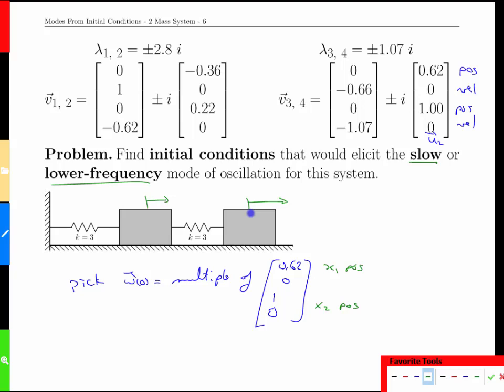Again this will be so much easier to see when it's animated later on in this series of videos. For now it's enough to recognize that we have four vectors to play with, those values represent positions and velocities, position and velocities, because of the way we created these four variables, and if we want to elicit one of these modes we just have to pick initial conditions that match one of those vectors.